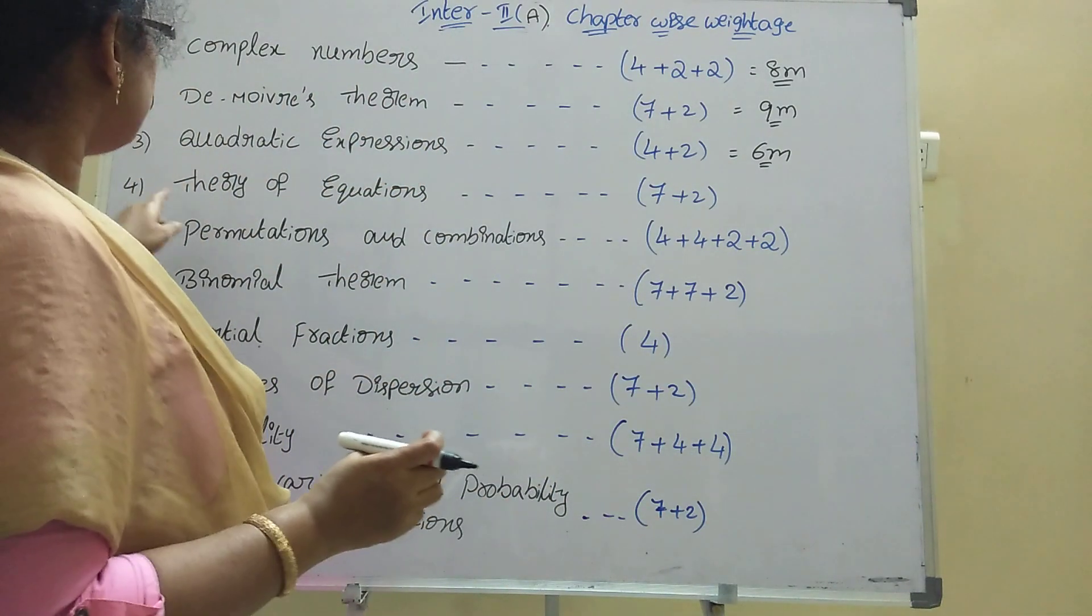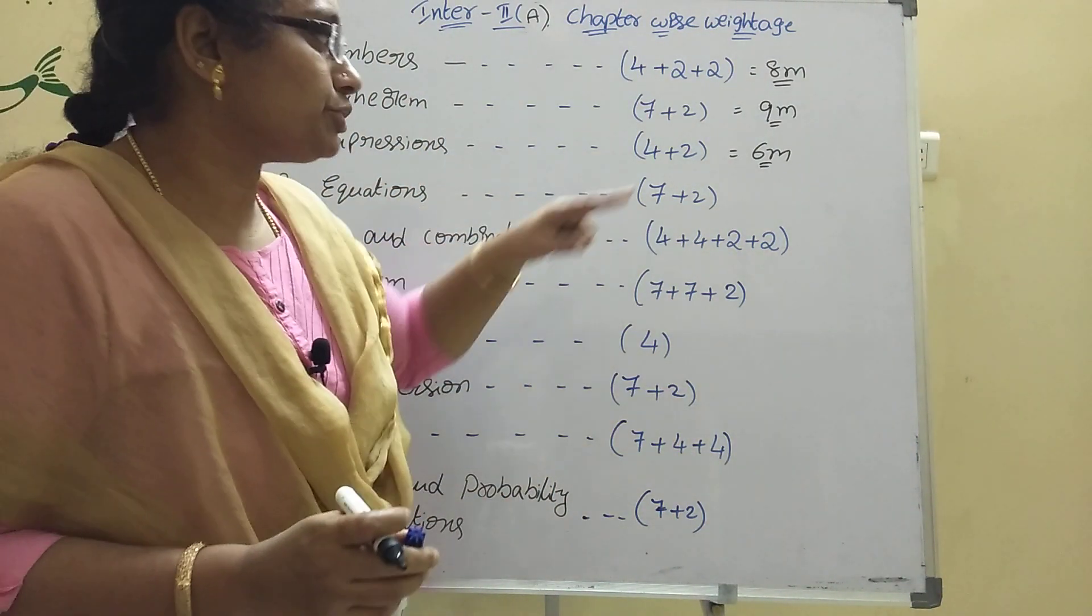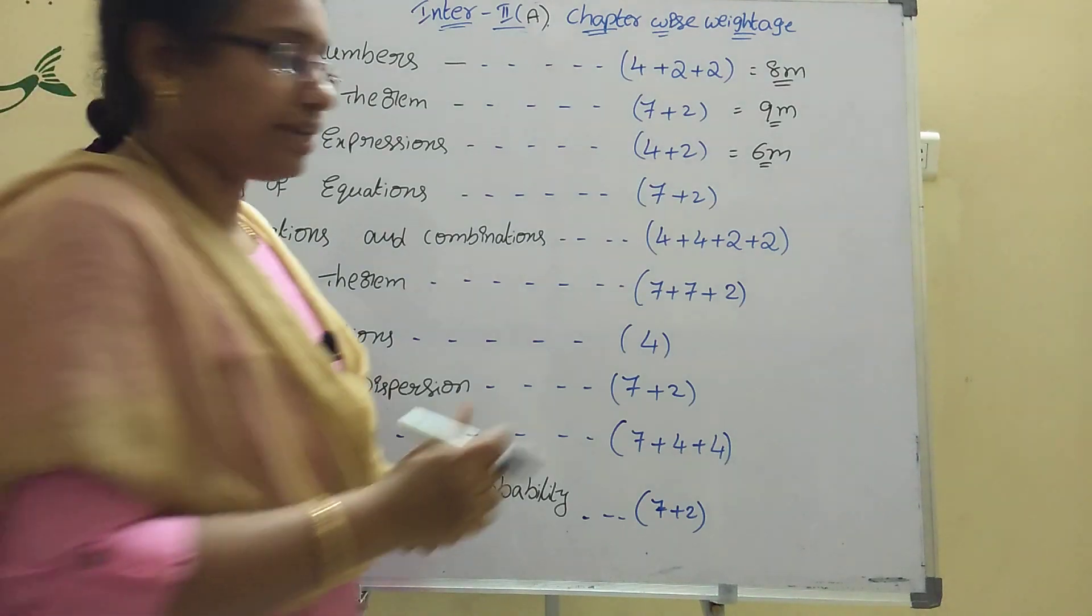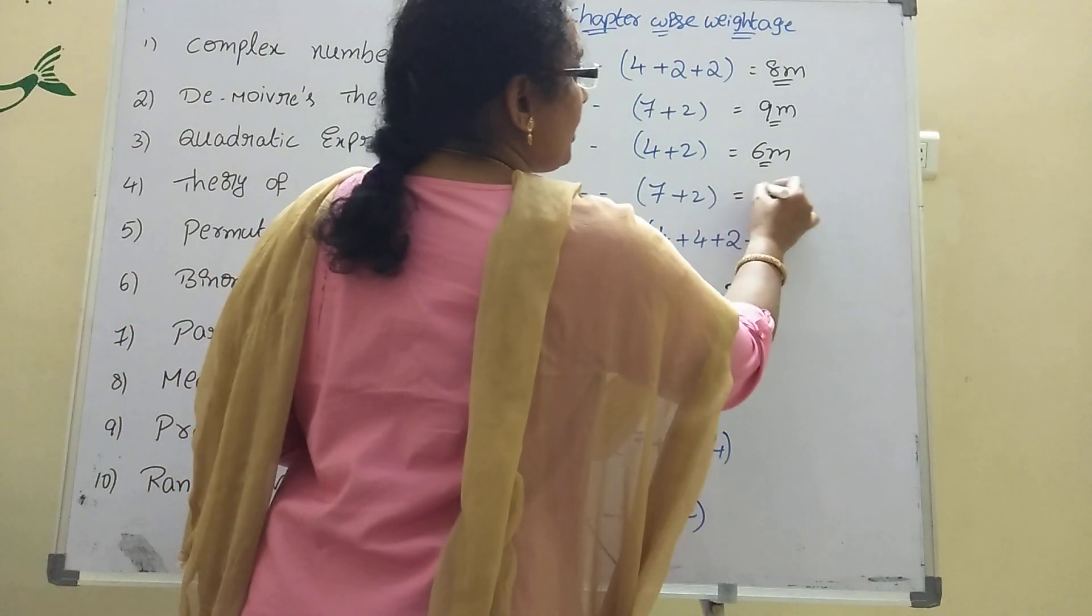Theory of equations: 7 plus 2. This chapter also I explained. Total 9 marks will be, one 7-mark plus one 2-mark.